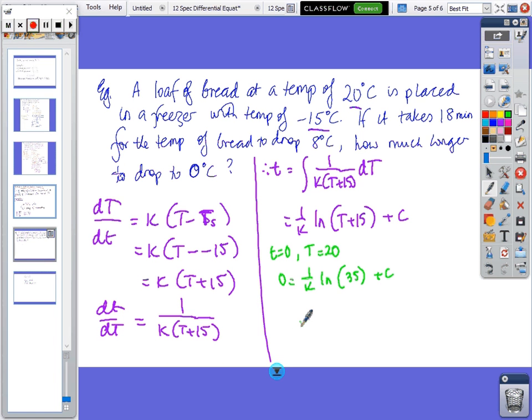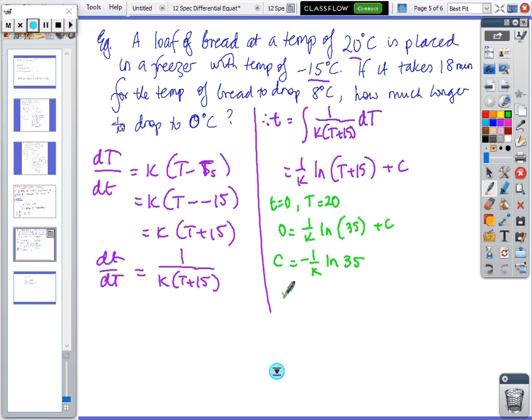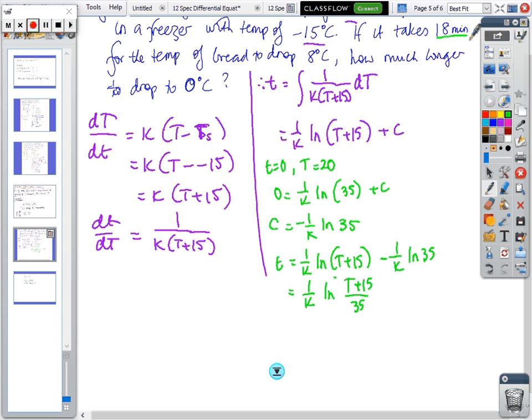So c equals -(1/k) ln(35). So the formula is t equals (1/k) ln(T + 15) minus (1/k) ln(35), which equals (1/k) ln((T + 15)/35).